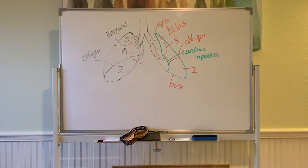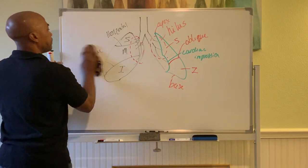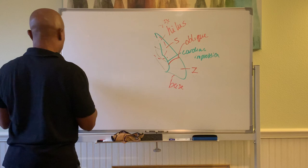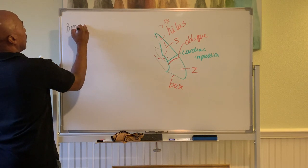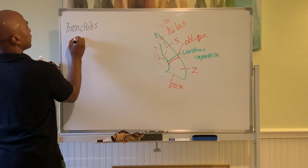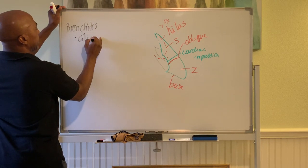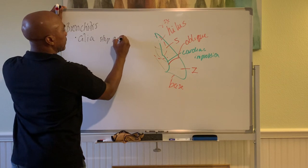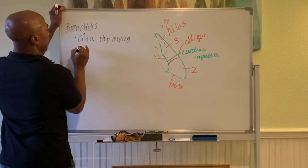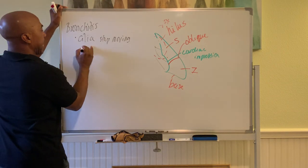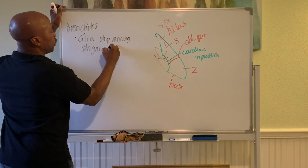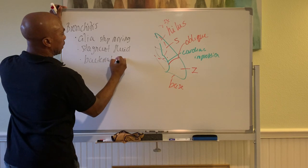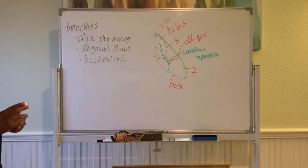Some conditions that happen in this system. These are some clinical conditions that we have here. We have bronchitis. Common bronchitis happens here where the cilia in the bronchi stop working. The cilia stop moving. As a result, then the fluid in the bronchi becomes stagnant, and this stagnant fluid leads to bacterial infections that happen inside your bronchi.